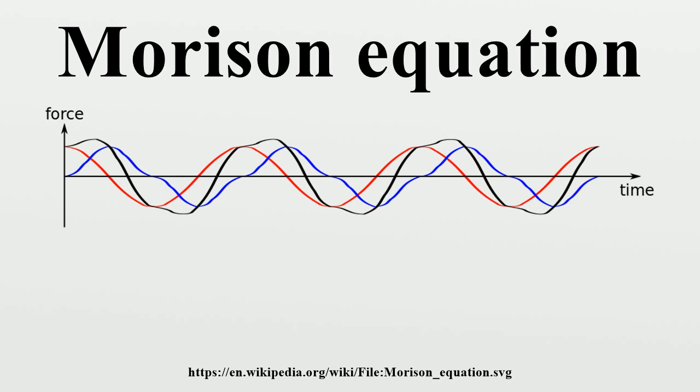Moving body in an oscillatory flow: In case the body moves as well, with velocity, the Morrison equation becomes, where the total force contributions are: